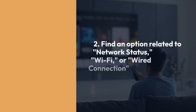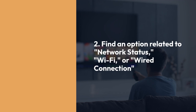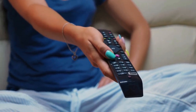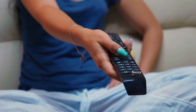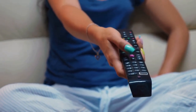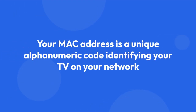Two, inside the network settings, you should find an option related to network status, Wi-Fi, or wired connection, depending on how your TV connects to the internet. Three, within the network status or connection details, you'll typically see your current MAC address displayed. This is a unique alphanumeric code identifying your TV on your network.